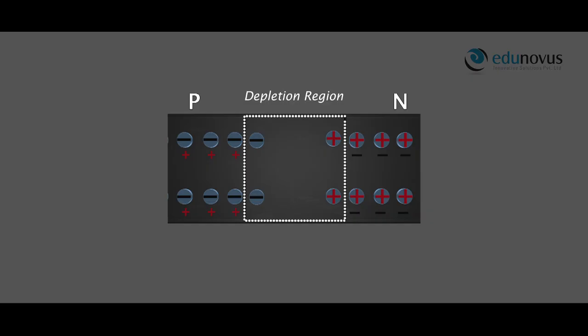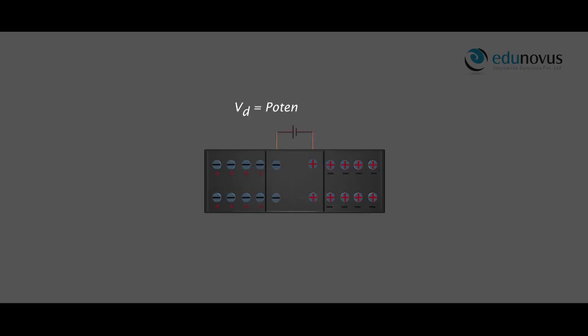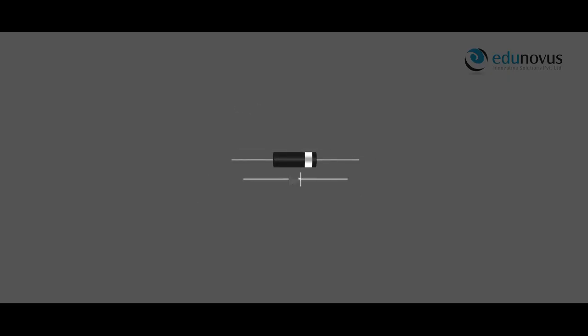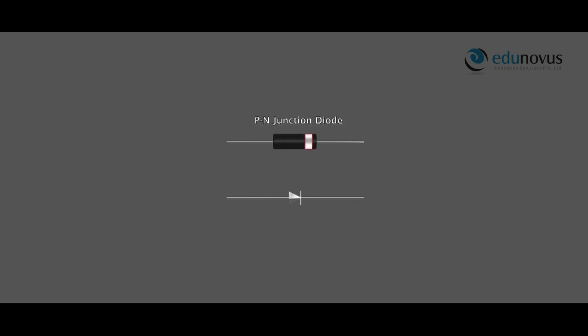Since on either side of the junction region stationary positive and negative charges exist, there is an electric potential difference Vd across the junction which is called the potential barrier. It prevents the further movement of holes and electrons. This combination is the PN junction diode, where the white line on one end indicates that it is the negative terminal.